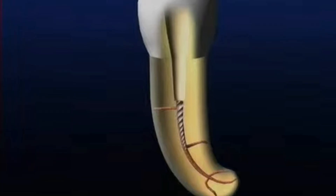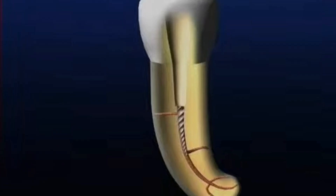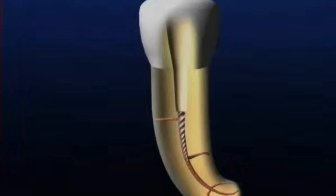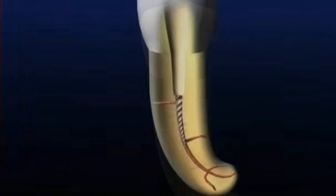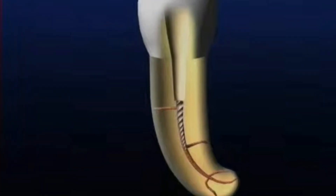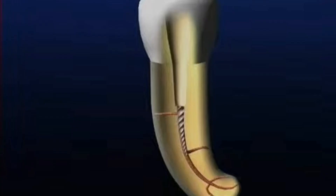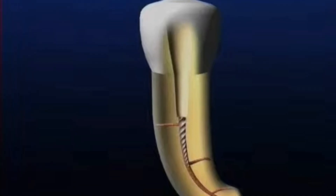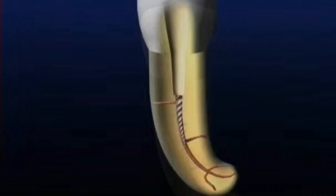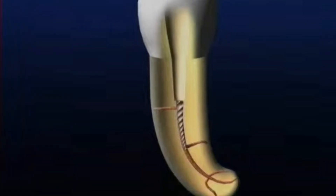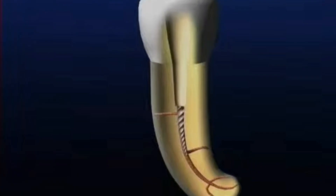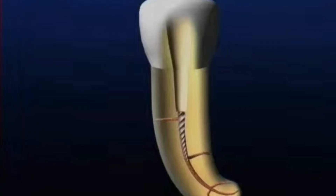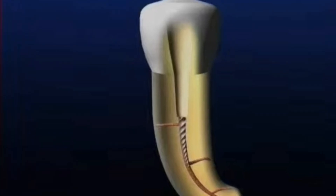In this illustration we can see how the coronal third of the canal has been widened with the modified Gates Glidden. What this allows is we're now able to see that file pretty clearly, and it also gives us an access point to start introducing ultrasonic tips.